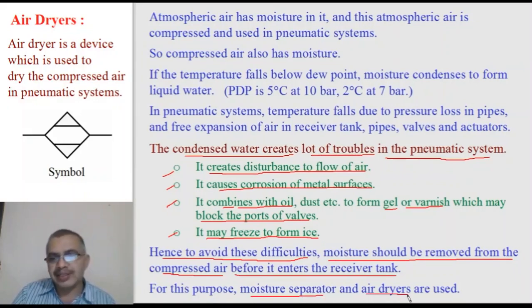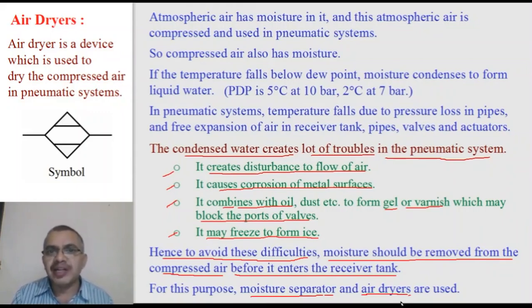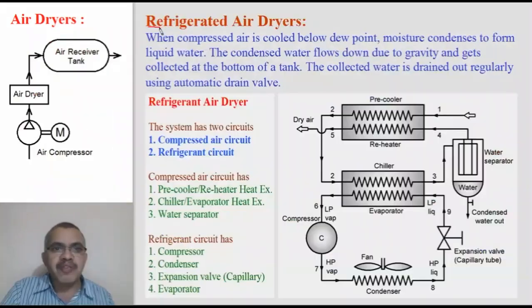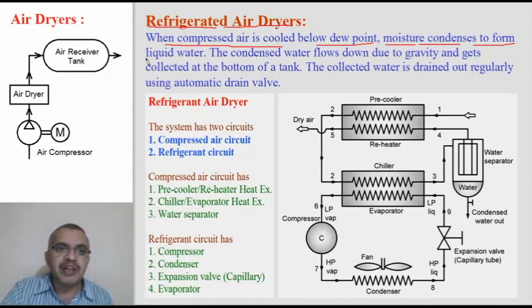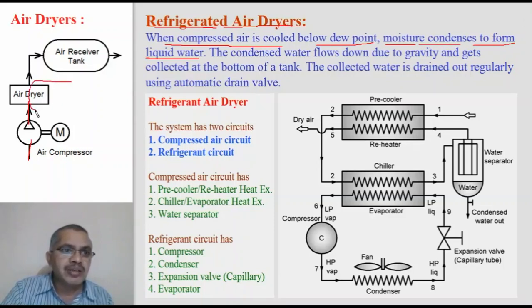To remove moisture from compressed air we use moisture separators and air dryers. There are three important types of air dryers: one is the refrigerated air dryer, the second is the deliquescent air dryer, and the third is the desiccant air dryer. The refrigerated air dryer uses a refrigeration system to cool the compressed air below the pressure dew point, causing moisture to condense into liquid water.